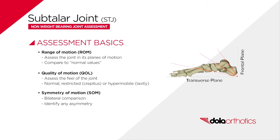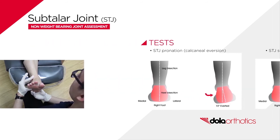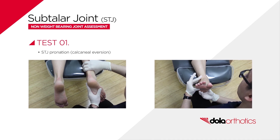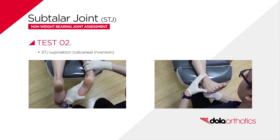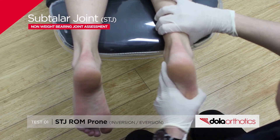Symmetry of motion assessment involves bilateral comparison to identify any asymmetry of function. Clinical tests can be performed with the patient either prone or supine, and comparison to normal published values is common. Non-weight bearing passive joint results are combined with active joint assessment and gait observations, as the subtalar joint plays an important role from heel strike through to propulsion and influences the function of other joints.